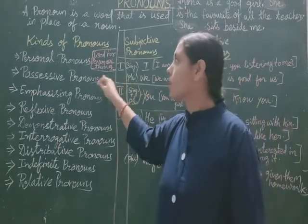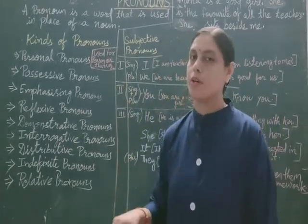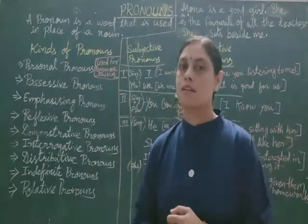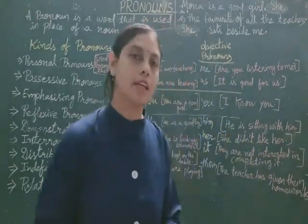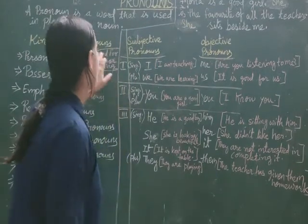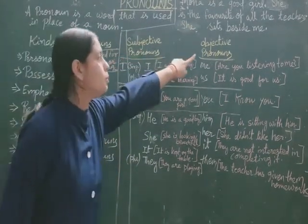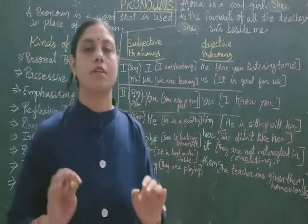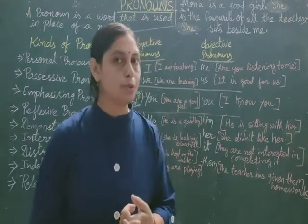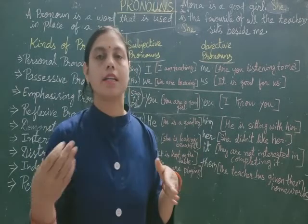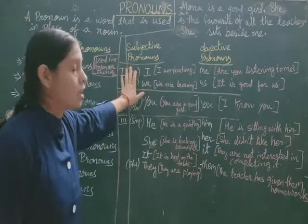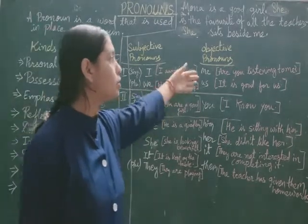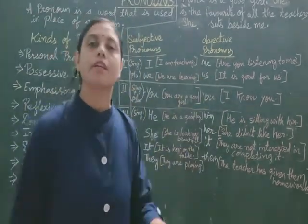First we will see what is personal pronoun. Personal pronoun is used for persons and things. Personal pronoun is divided into two parts: first is subjective pronouns and second is objective pronouns. A sentence is divided into two parts — subject and object. So a pronoun used in the subject place is called a subjective pronoun, and the pronoun used in the object place is called an objective pronoun.